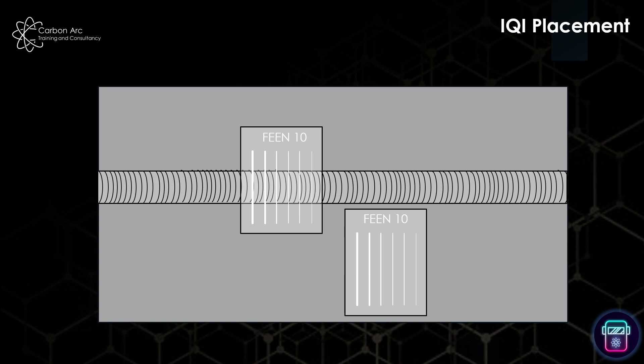So, when placing my IQI on my weld, there's two methods or two trains of thought on where the IQI should be placed. And normally that's denoted either by your specification or your client requirements. And here I'm trying to show both of them. So, here we've got two F-E-E-N-10 IQIs. One is across the weld and one is off of the weld. Now, there's a sort of debate still ongoing, really, about which is the best place to place these.